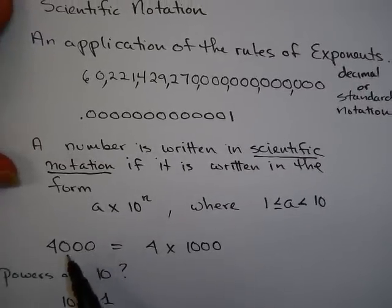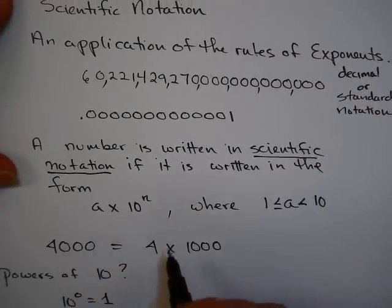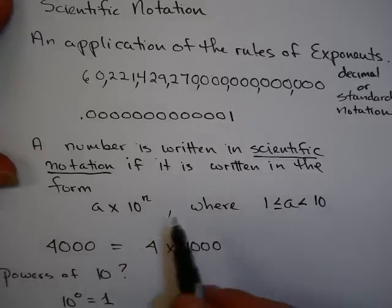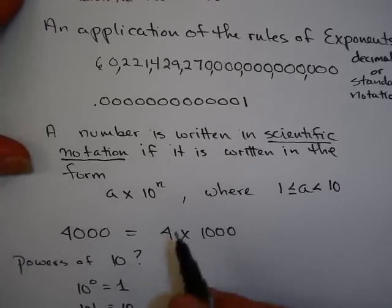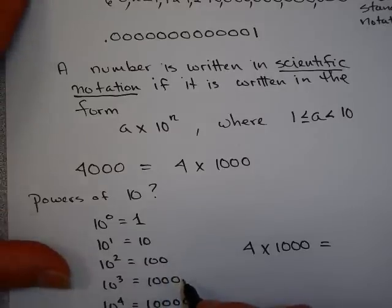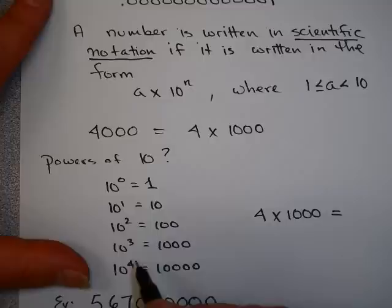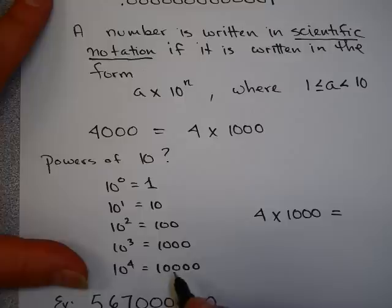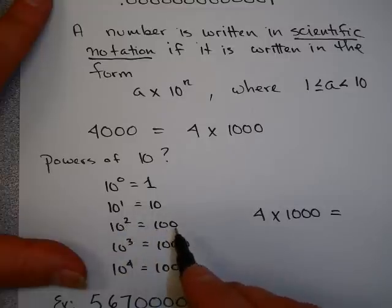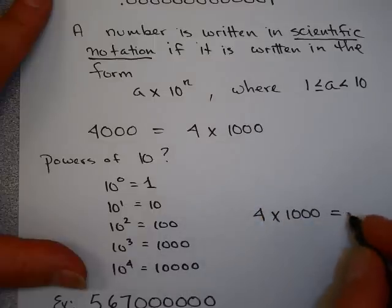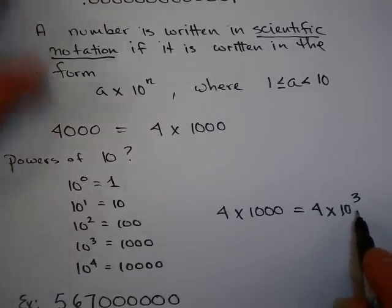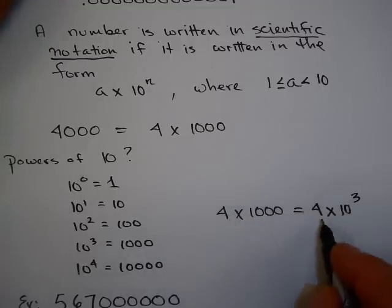For example, let's consider the number 4,000, which is 4 times 1,000. I'd like to write 1,000 as a power of 10. 4 certainly is between 1 and 10. Looking at the positive powers of 10: 10 to the 0 is 1, 10 to the 1st is 10, 10 squared is 100, 10 cubed is 1,000, and 10 to the 4th is 10,000. You'll notice that when you have a power of 10, the exponent represents the number of zeros at the end. So 10 cubed has 3 zeros, 10 squared has 2 zeros. So 4,000 is 4 times 10 to the 3rd — that puts this number into scientific notation.